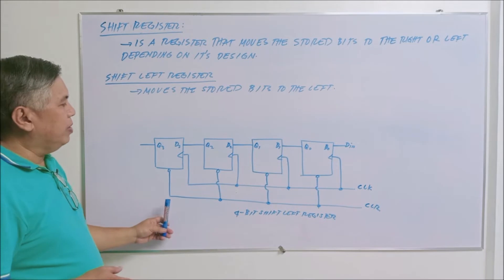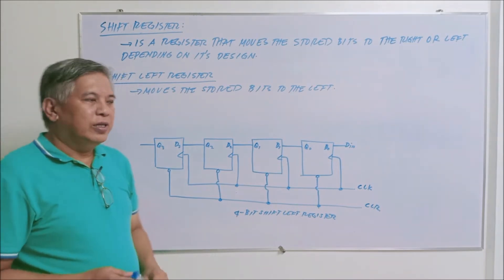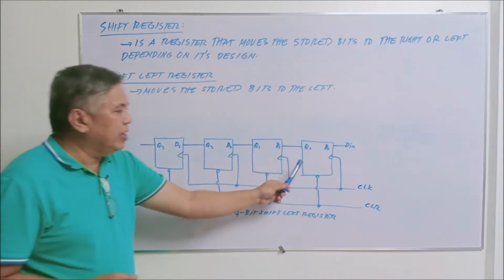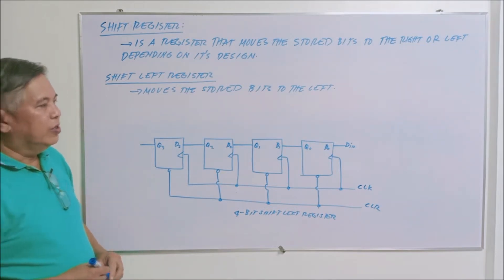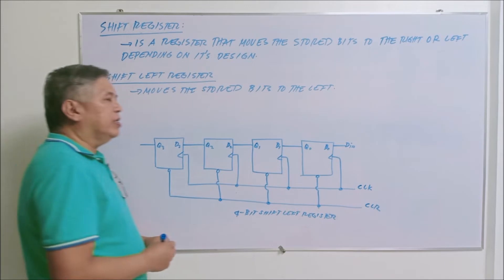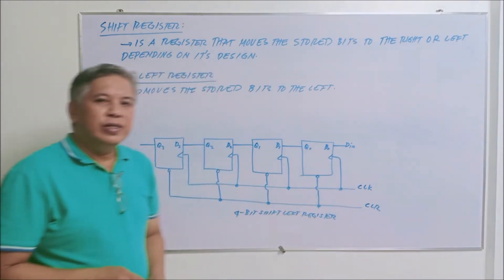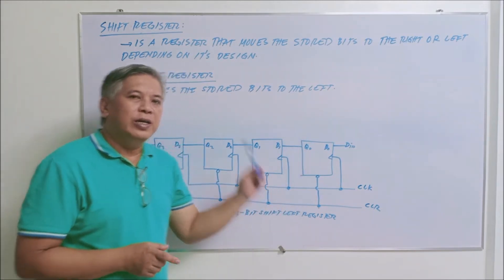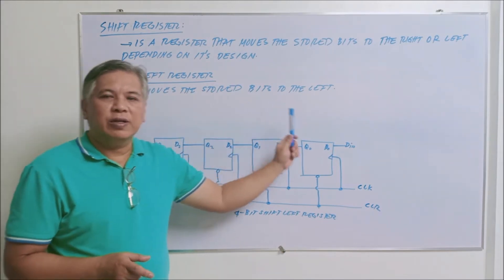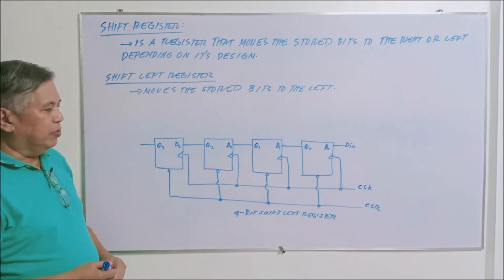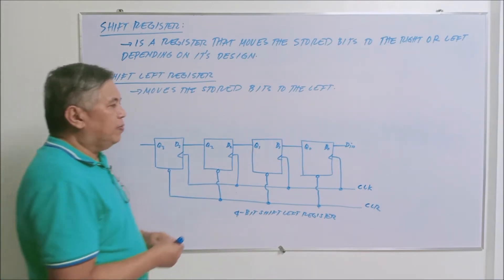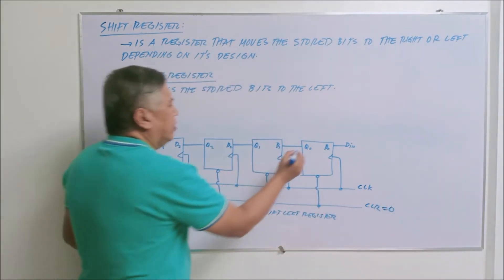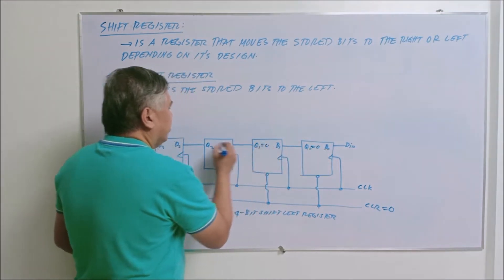What we have here is a four-bit shift left register, and if you notice, we are still using D flip-flops. In the shift left register there is only one input, represented by your D input, unlike in a buffer register where you have four inputs represented by X3, X2, X1, and X sub zero. Now if clear is equal to zero — since this is low clear — then all of the flip-flops will be reset to zero.